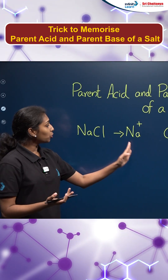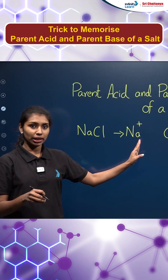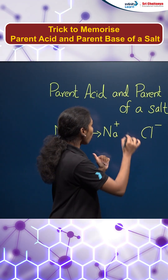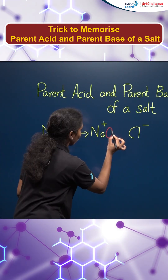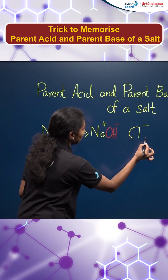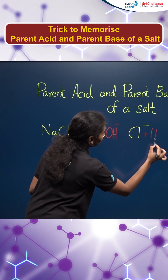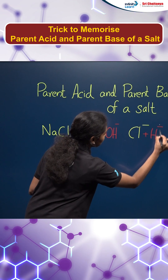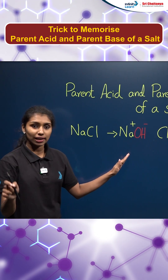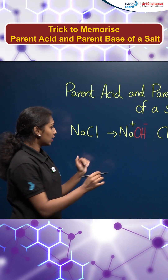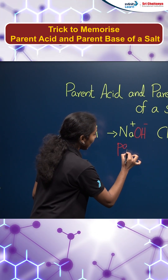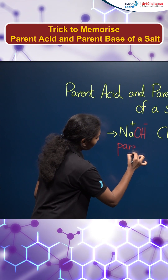The second step: we need to add a water molecule — OH- to the Na+ and H+ to the Cl-. So we will get the base as well as the acid. NaOH will be the parent base here.